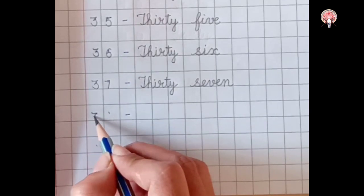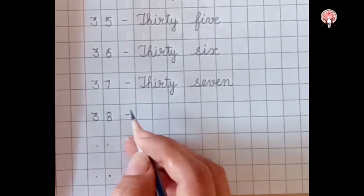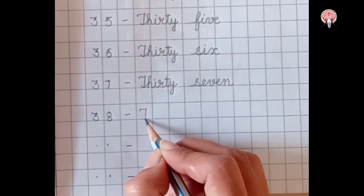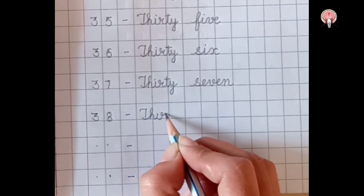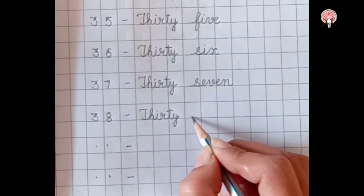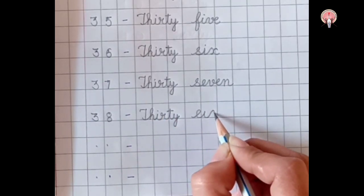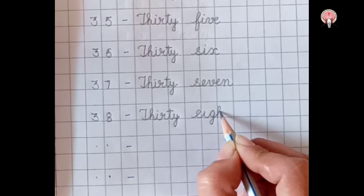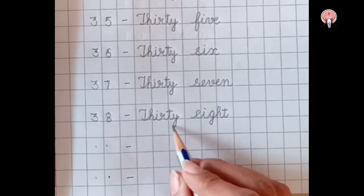3, 8, 38. Thirty, T-H-I-R-T-Y, 30. Eight, E-I-G-H-T, 8. 38.